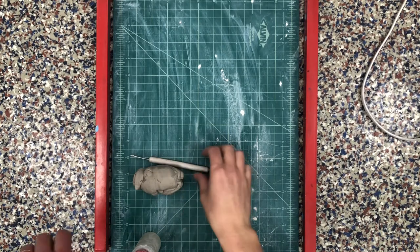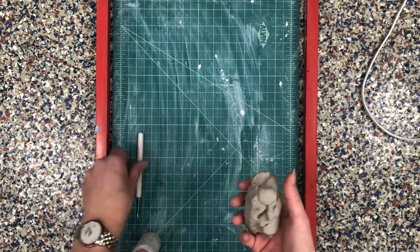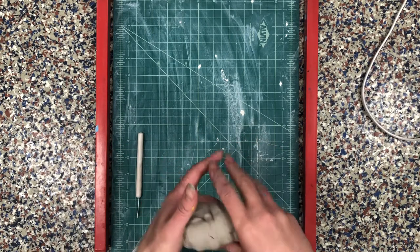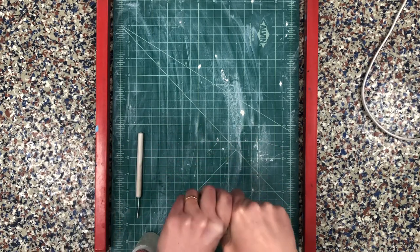Today we're gonna be making an insect out of clay. You're gonna start off with a lump of clay and you need to tear off a tiny piece for the head.